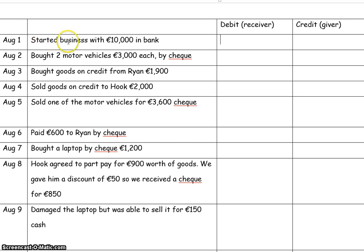On August the 1st, start a business with 10,000 in the bank and we look at it from the point of view of the business. The business is receiving 10,000 into the bank so we need to debit the business bank account, and then we record the giver. The giver is the person, the investor, the owner, and the name we have for that when someone invests money in their own business we call it capital. So bank and capital for these type of transactions.